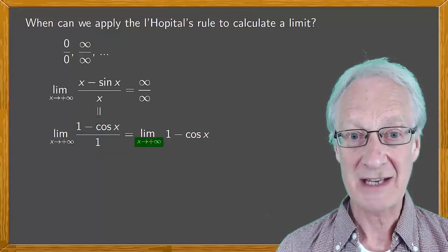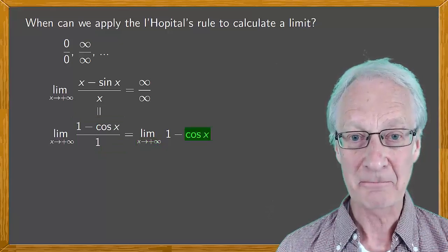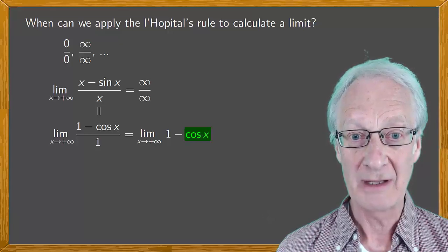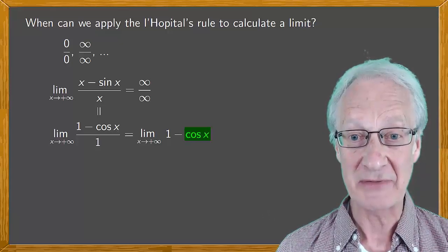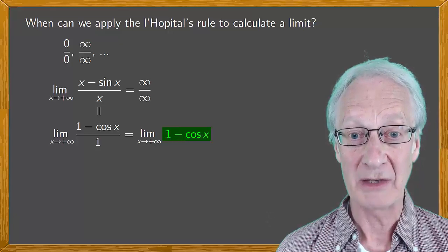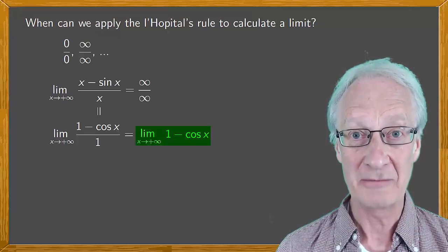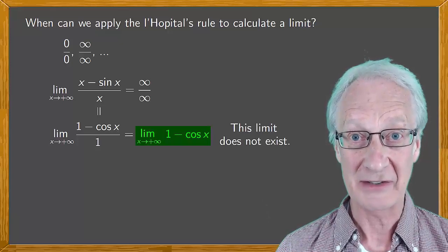But as x tends to infinity, cos x varies between -1 and 1, and doesn't approach any specific value. Neither, then, does 1 - cos x approach any specific value. Therefore, this limit doesn't exist.